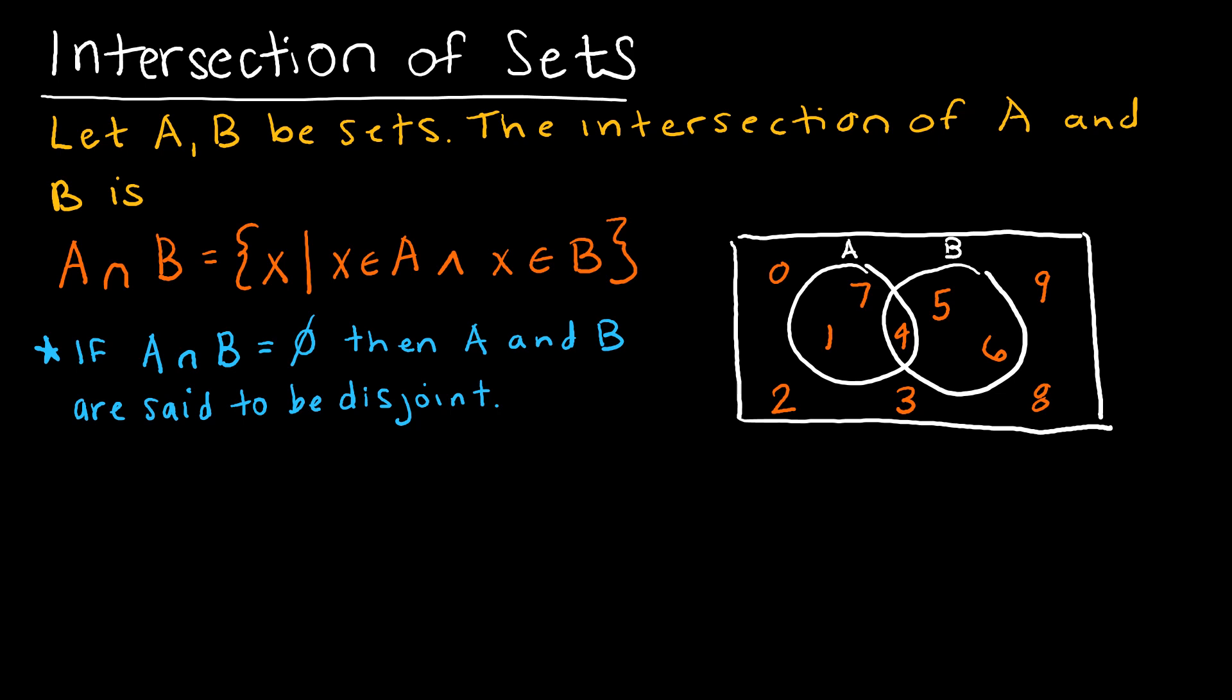So the intersection of sets, if the union was sort of like an or, this is sort of like an and. And I'm saying the only way that it belongs in the intersection is if it's in set A and B. So here I'm saying A intersect B is the set of all X's such that X is in A and X is in B.